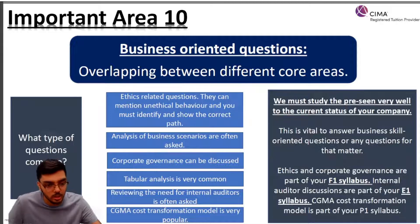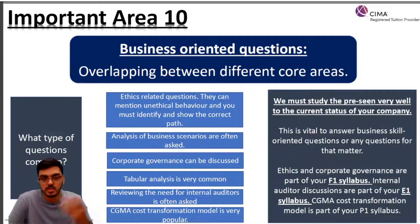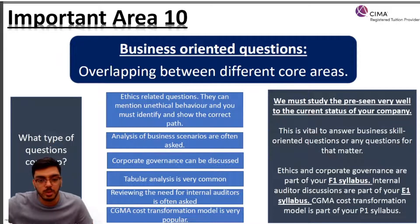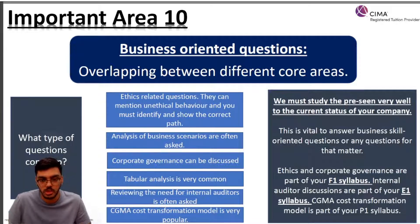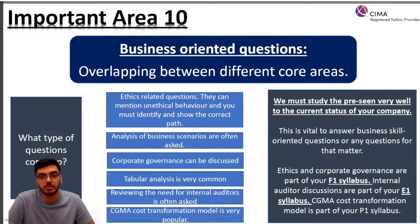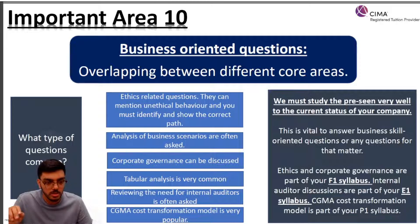The UK Corporate Governance Code, part of your F1 syllabus, becomes very important here. A newer question type that has started to come up is the CGMA Cost Transformation Model — they'll tell you they want to save costs and completely transform how the business works by introducing this model. It's part of your P1 syllabus, and you should know the six parts of this cost transformation model so you can explain each part in your own words, relating it to your pre-seen company.